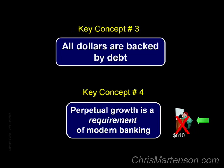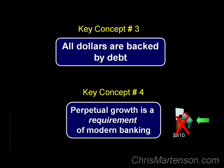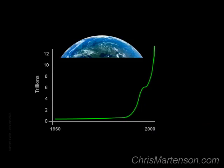I might wish and hope that my car would run on straw, but I'd be wasting my time because that's just not how it was designed. By understanding the requirement for continual expansion, we will be in a better position to make informed decisions about what's likely to transpire and take meaningful actions to enhance our prospects. So the key question is: what happens when a human-contrived money system that must expand by its very design runs headlong into the physical limits of a spherical planet?